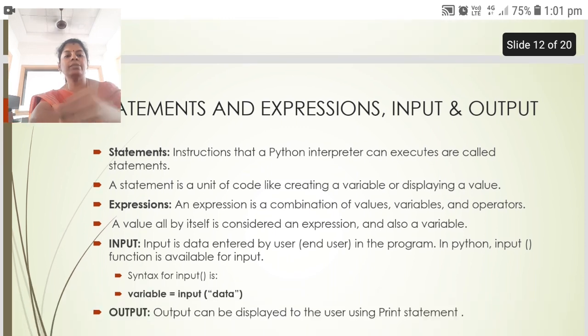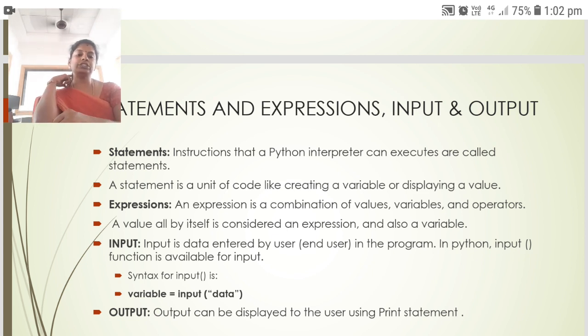The next is statements and expressions, input and output. Statements is the instructions that a Python interpreter can execute or call statement. A statement is a unit of code like creating a variable or displaying a variable. Expressions: an expression is a combination of values, variables and operators. A value all by itself is considered an expression and also a variable. Input is the data entered by the user in the program. Input function is available for input. Output: the output can be displayed to the user using print statement.